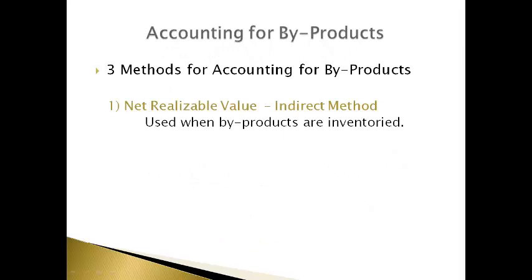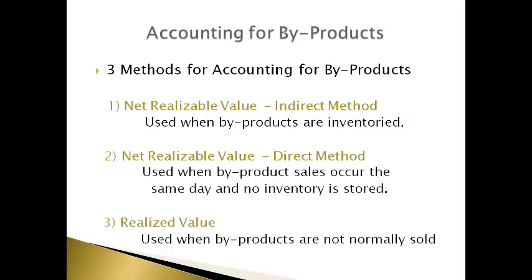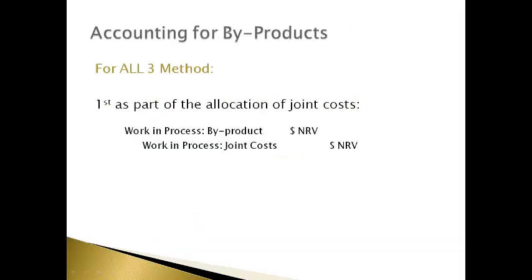There are three methods of accounting for byproducts. The net realizable value indirect method is used when byproducts are stored in the warehouse before they are sold. The net realizable value direct method is used when the sale occurs the same day and no inventory is stored. The realized value method is used when byproducts are not typically further processed or sold. For all methods, the first entry that must be made is to move the net realizable value from the WIP joint cost into the WIP for the byproduct.